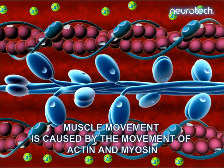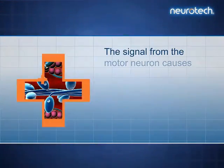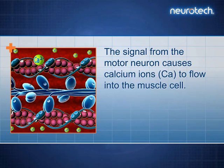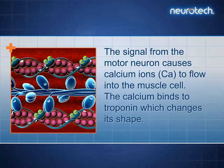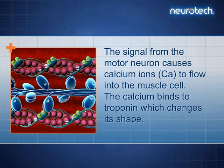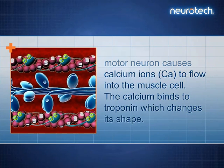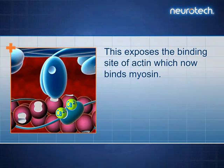Muscle movement is caused by the movement of actin and myosin. The signal from the motor neuron causes calcium ions (CA for short) to flow into the muscle cell. The calcium binds to troponin, which changes its shape. This exposes the binding site of actin, which now binds myosin.